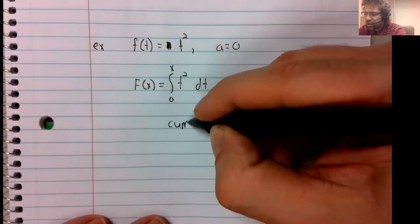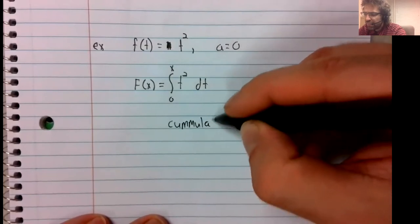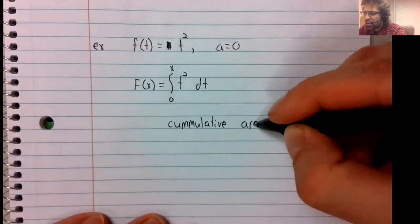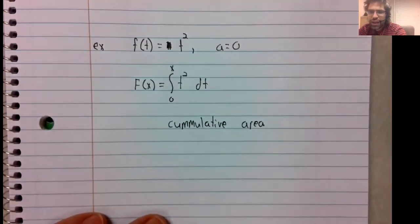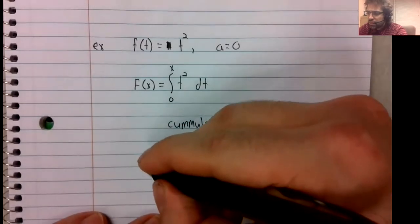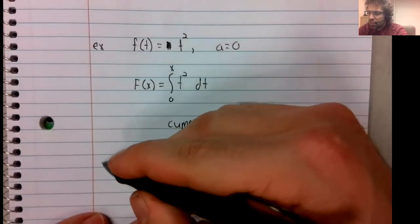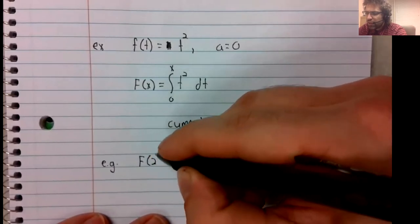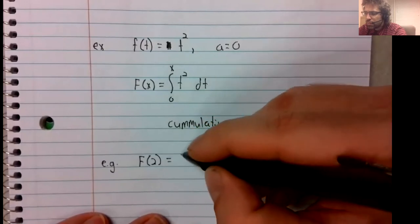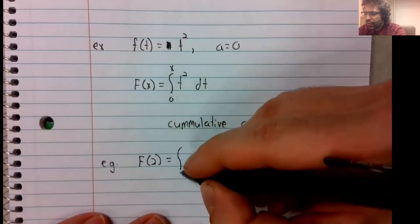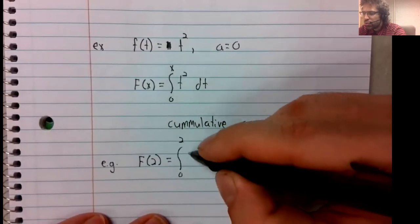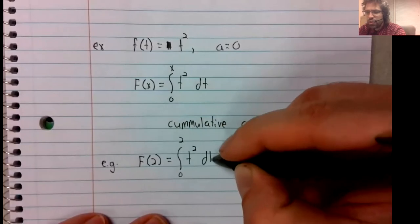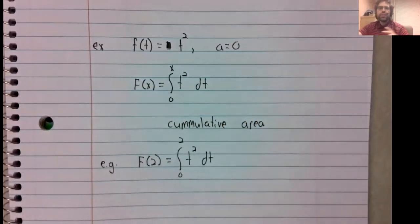This function represents cumulative area. So, for example, F(2), the integral from 0 to 2 of t squared dt.